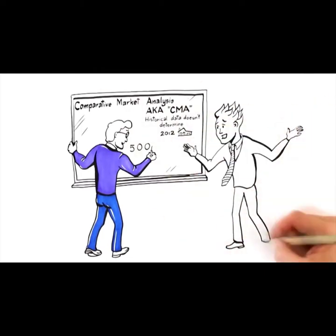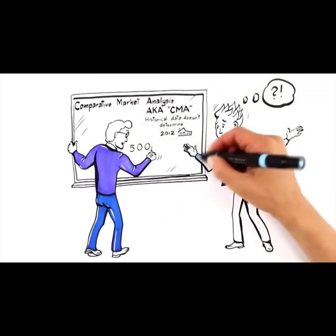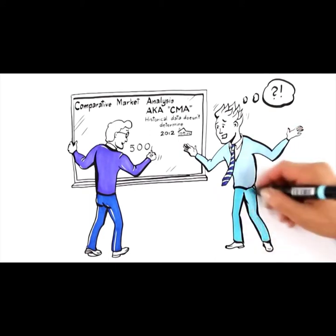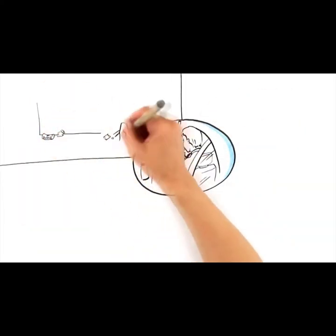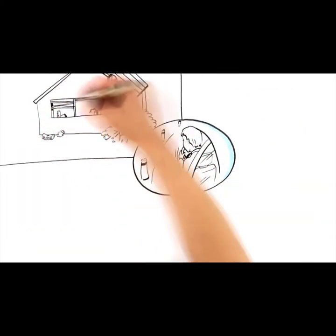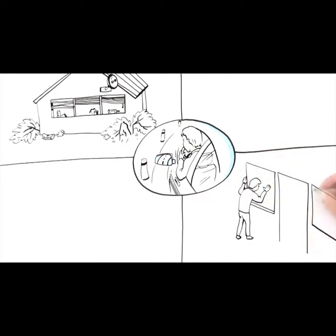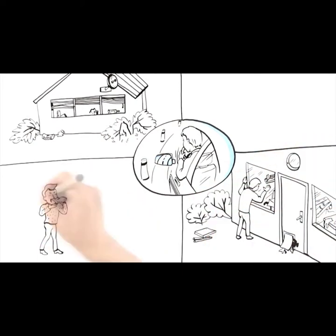What most agents don't realize is that historical data doesn't determine how you should position your home in today's market to attract the highest offer. This would be like driving your car while looking in the rearview mirror. What if the home was a rental occupied by college kids, or packed wall-to-wall with junk, or reeked of offensive cat odor?